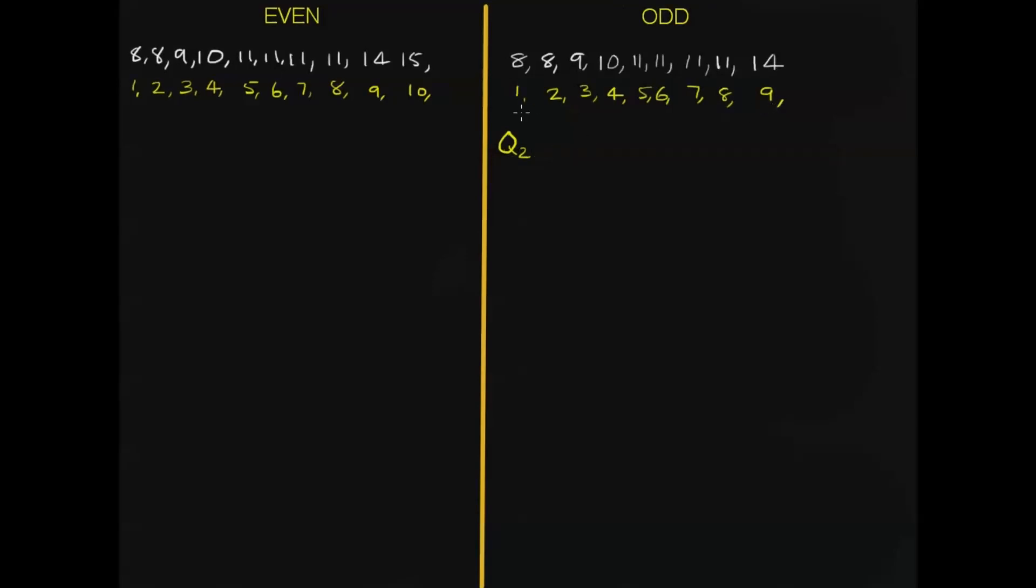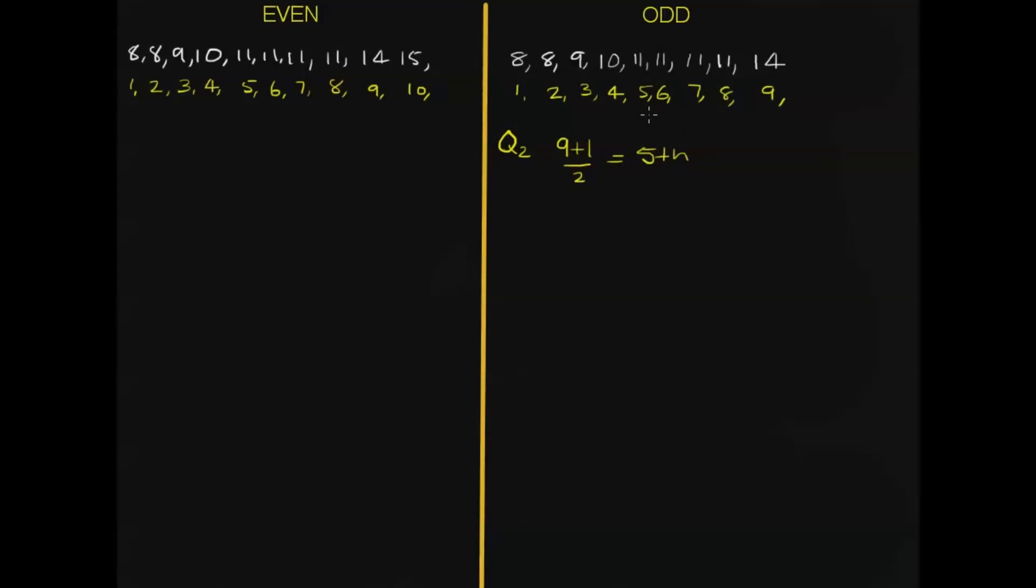We have nine scores, so what we do is we go 9 plus 1 divided by 2 equals 5. So we're looking for the fifth score in this odd set of data. So 1, 2, 3, 4, 5 is this 11, so it's equal to 11, straightforward.